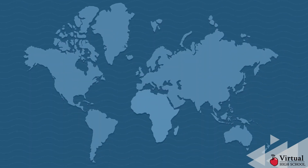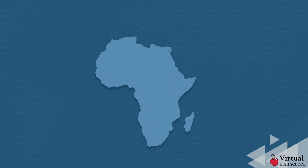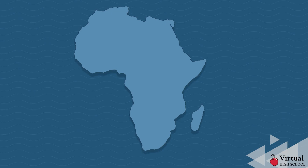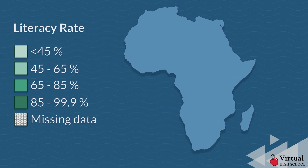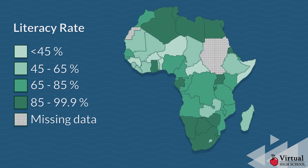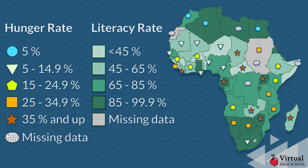Here's how you would map this data to help illustrate possible connections. First, start with a base map of the world and focus on the continent of Africa. Next, add the data to the map. The literacy rate data shows the spatial distribution of literacy across the African continent. Then, overlay hunger data to see if there is any connection between hunger and literacy.